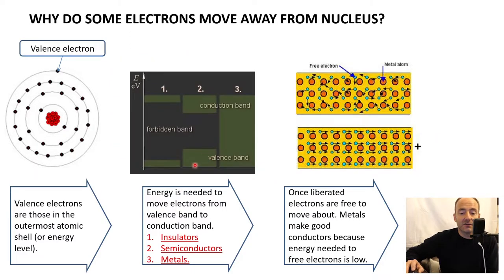In a semiconductor, we can see that this forbidden band or the gap between the valence band and the conduction band is smaller, so we don't need to apply as much energy to make an electron jump. Finally, in the case of a metal, number three, the conduction band and the valence band are basically the same thing. There is no forbidden band or gap between the two, so we don't have to apply any energy to make electrons move around away from their atoms.